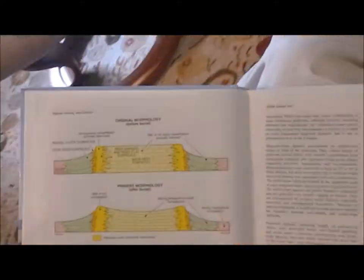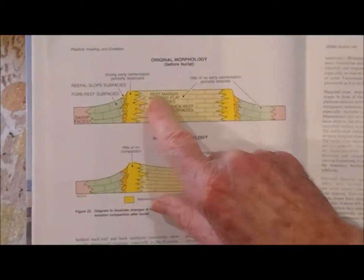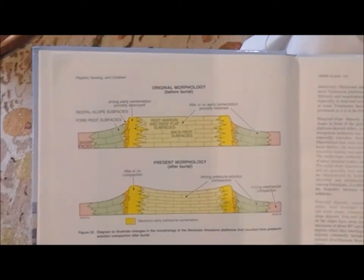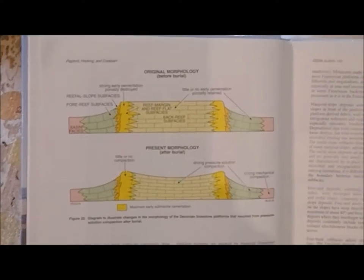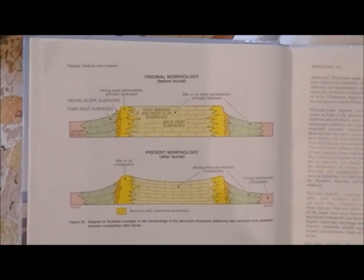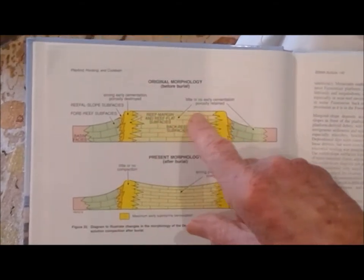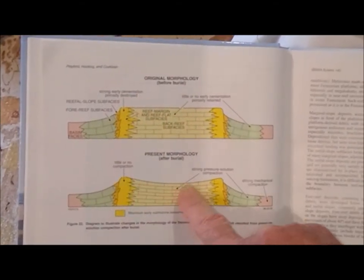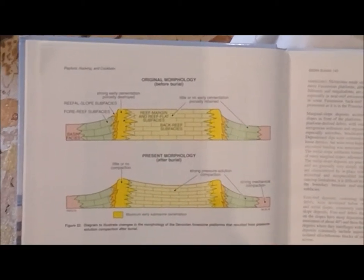This one illustrates an important thing. When the rocks were laid down, originally they were horizontal, but over time the cavities between the various organisms were filled in, and it resulted in a dishing shape of the platforms. Instead of being horizontal tops, they dished like this through pressure solution compaction.